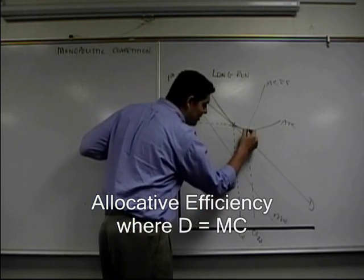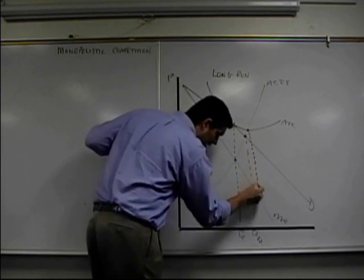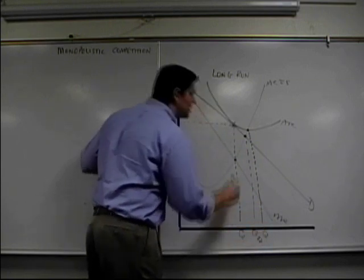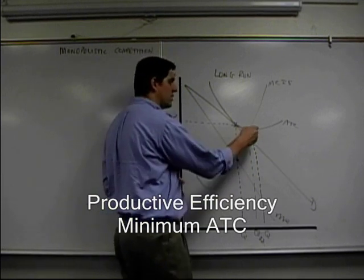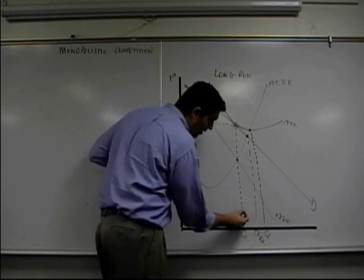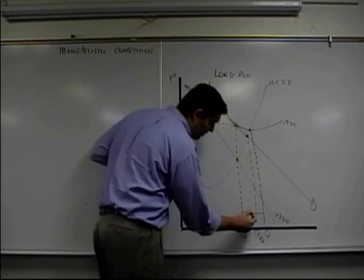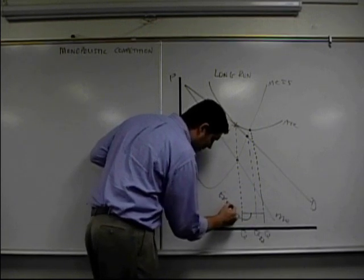Now notice, this is not the same as this. This right here is the quantity that is minimum ATC. That's the quantity that is productively efficient. They're producing the lowest possible cost. And that concept, this distance between that distance, is something called excess capacity.